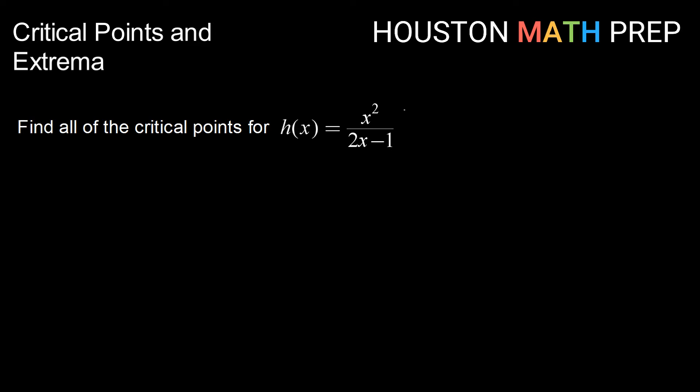Since we have a quotient here, I'm going to identify the top function as f and the bottom function as g. Then h prime of x, using our quotient rule, will begin f prime times g, or 2x times